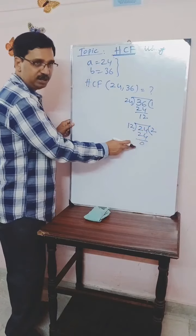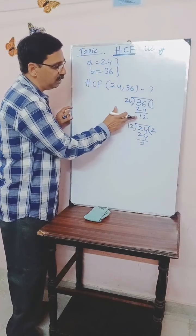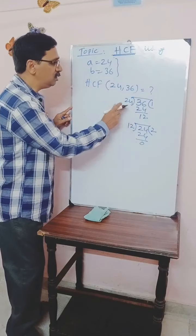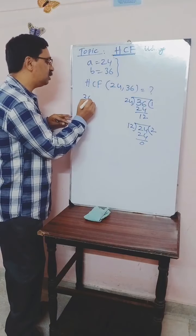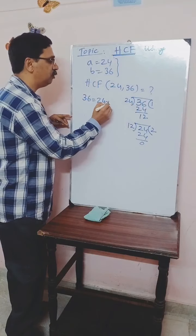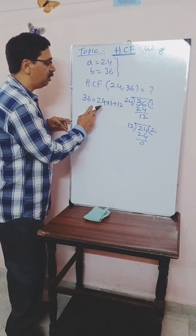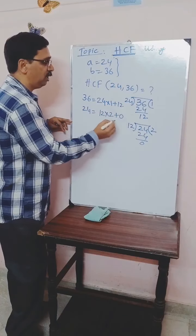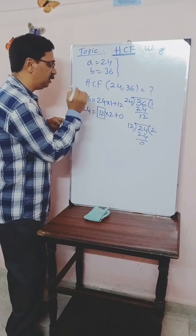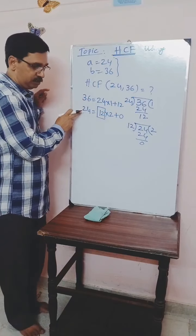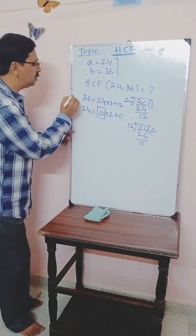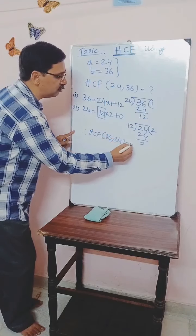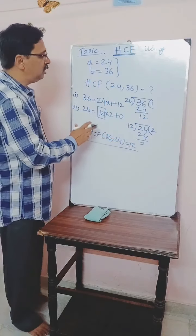Now 12 times 2 is 24, and the remainder is 0. When the remainder is 0, we stop the process. In step 1, we express 36 as: 36 = 24 × 1 + 12. In step 2, we divide 24 by the remainder 12: 24 = 12 × 2 + 0. When the remainder is 0, the divisor obtained is the HCF of the given numbers. So 12 is the HCF of 36 and 24. Therefore, HCF(36, 24) = 12. This process is called Euclid's division algorithm.